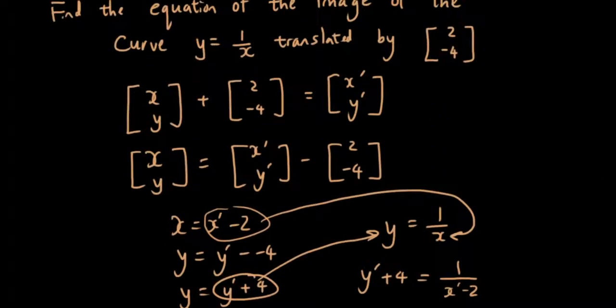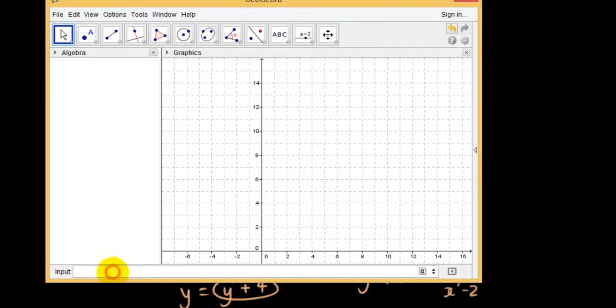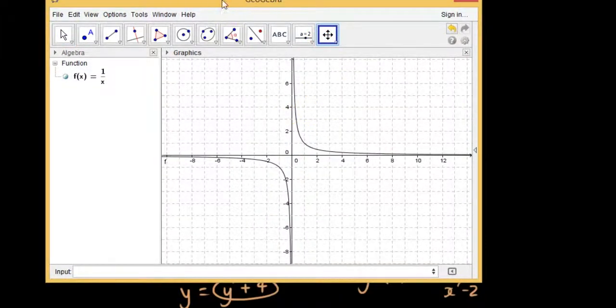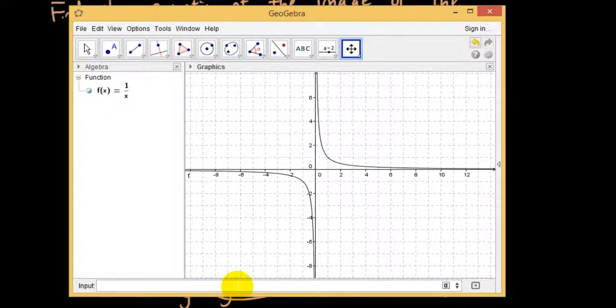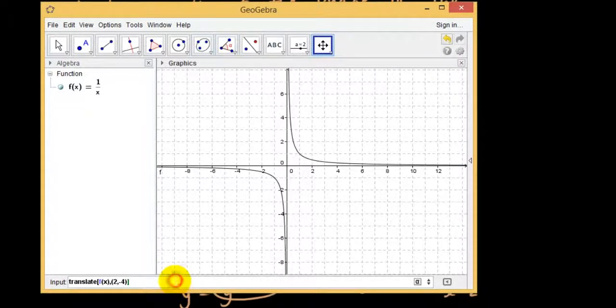So let's put in y equals 1 over x into GeoGebra. Clear everything I have here. y equals 1 over x. Awesome graph. Now let's translate it using 2 and -4. So translate f of x with 2 and -4. Yes, that's what I have. So press enter.